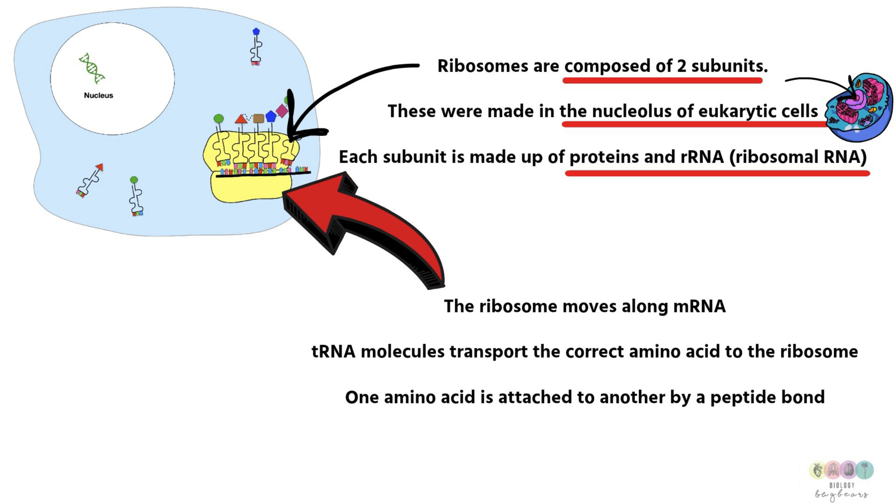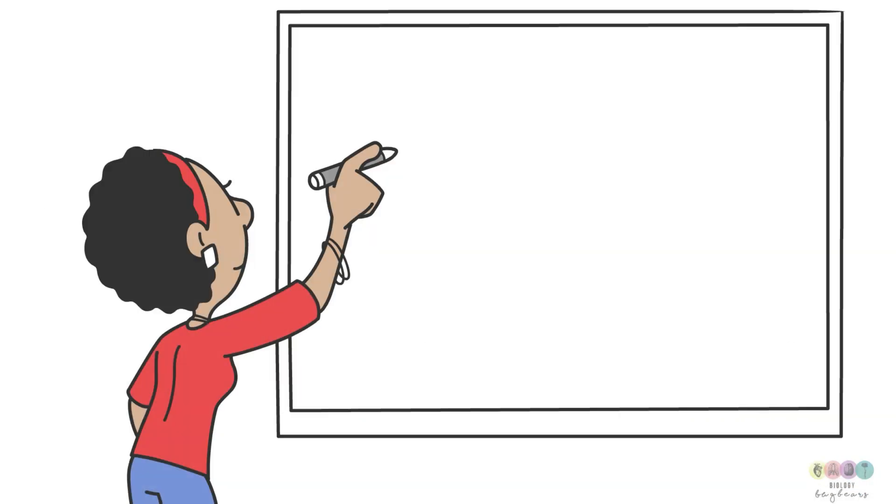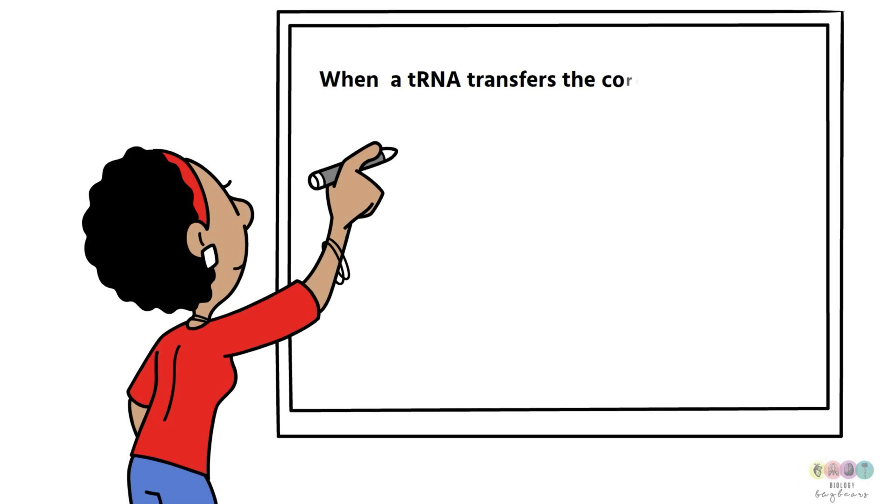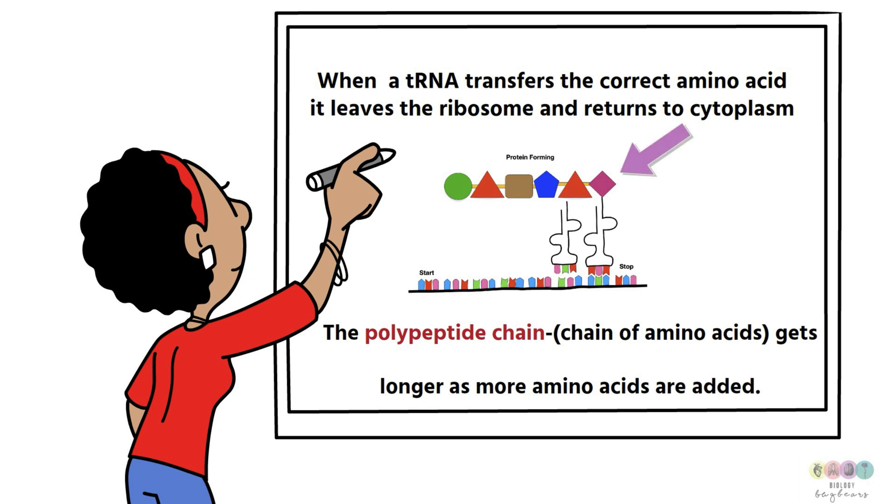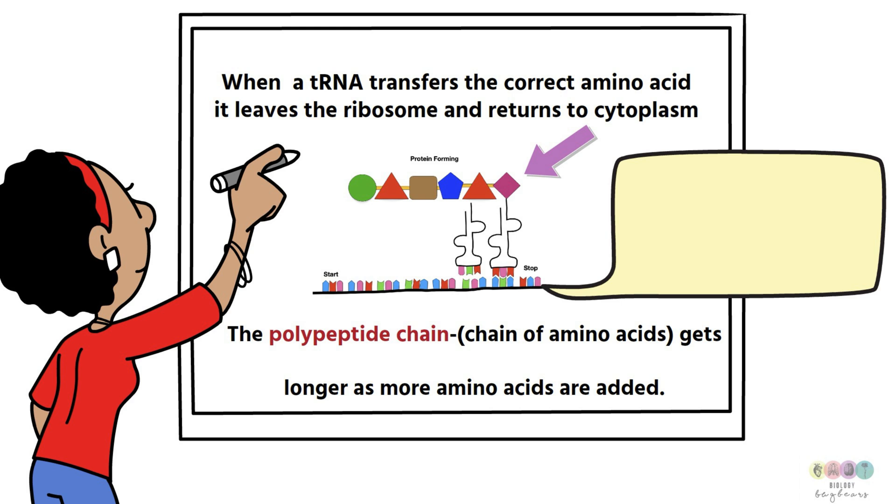So in the ribosome, the ribosome moves along the messenger RNA. The transfer RNA molecules transport the correct amino acid to the ribosome and one amino acid is attached to the next or another by a peptide bond. When the tRNA molecule transfers or brings the correct amino acid, it then leaves the ribosome and returns to the cytoplasm and cannot bring another one of those particular amino acids again. A polypeptide chain, a chain of amino acids, forms and this gets longer as more amino acids are added.